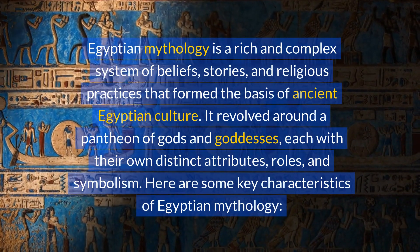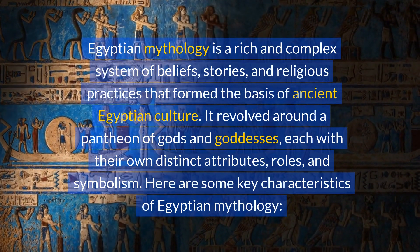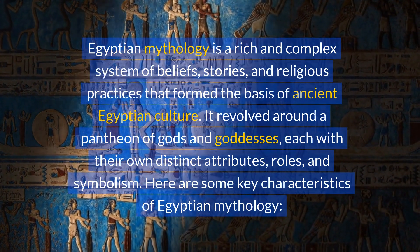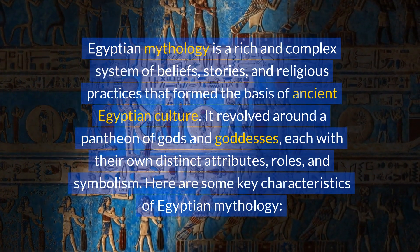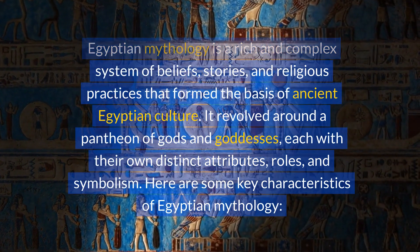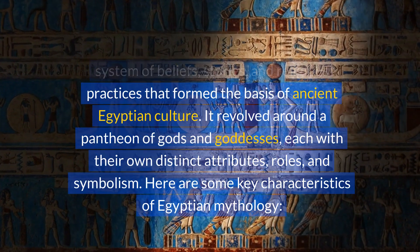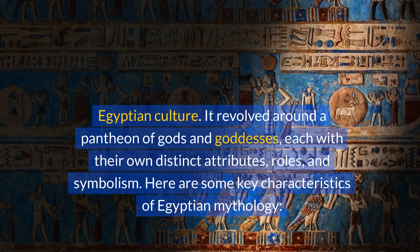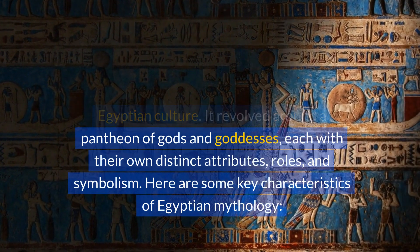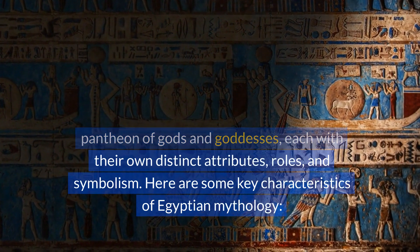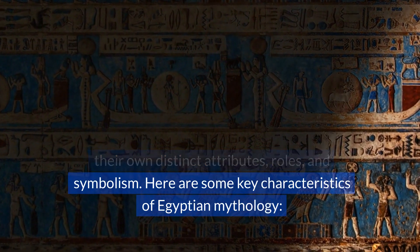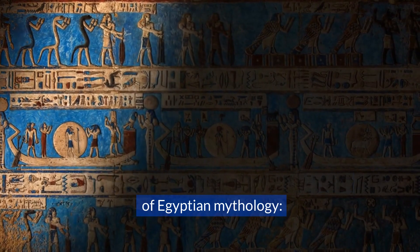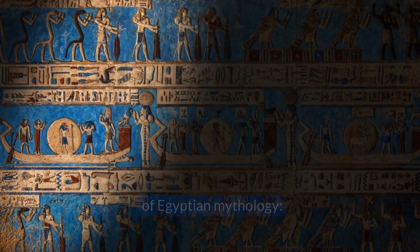Egyptian mythology is a rich and complex system of beliefs, stories, and religious practices that formed the basis of ancient Egyptian culture. It revolved around a pantheon of gods and goddesses, each with their own distinct attributes, roles, and symbolism. Here are some key characteristics of Egyptian mythology.